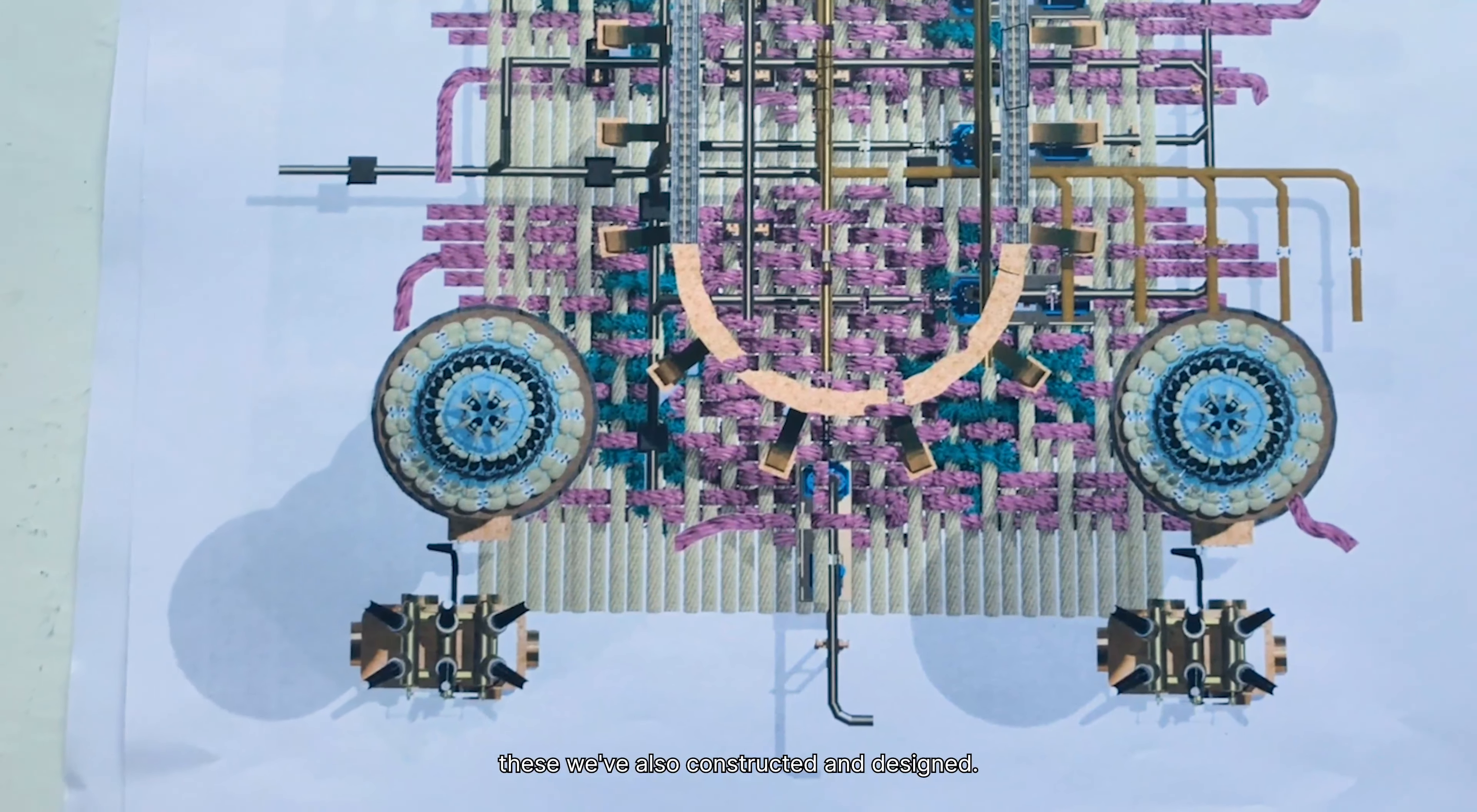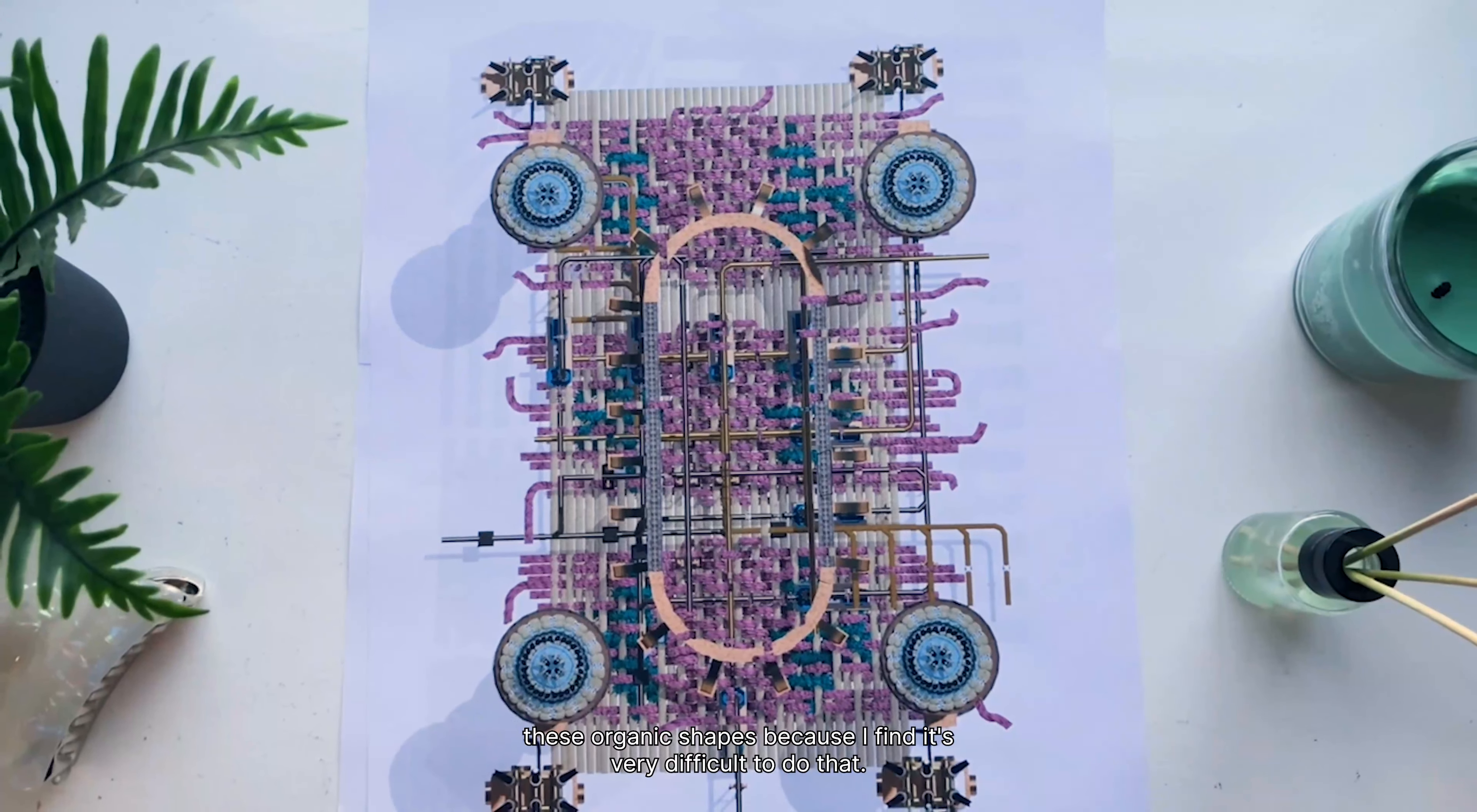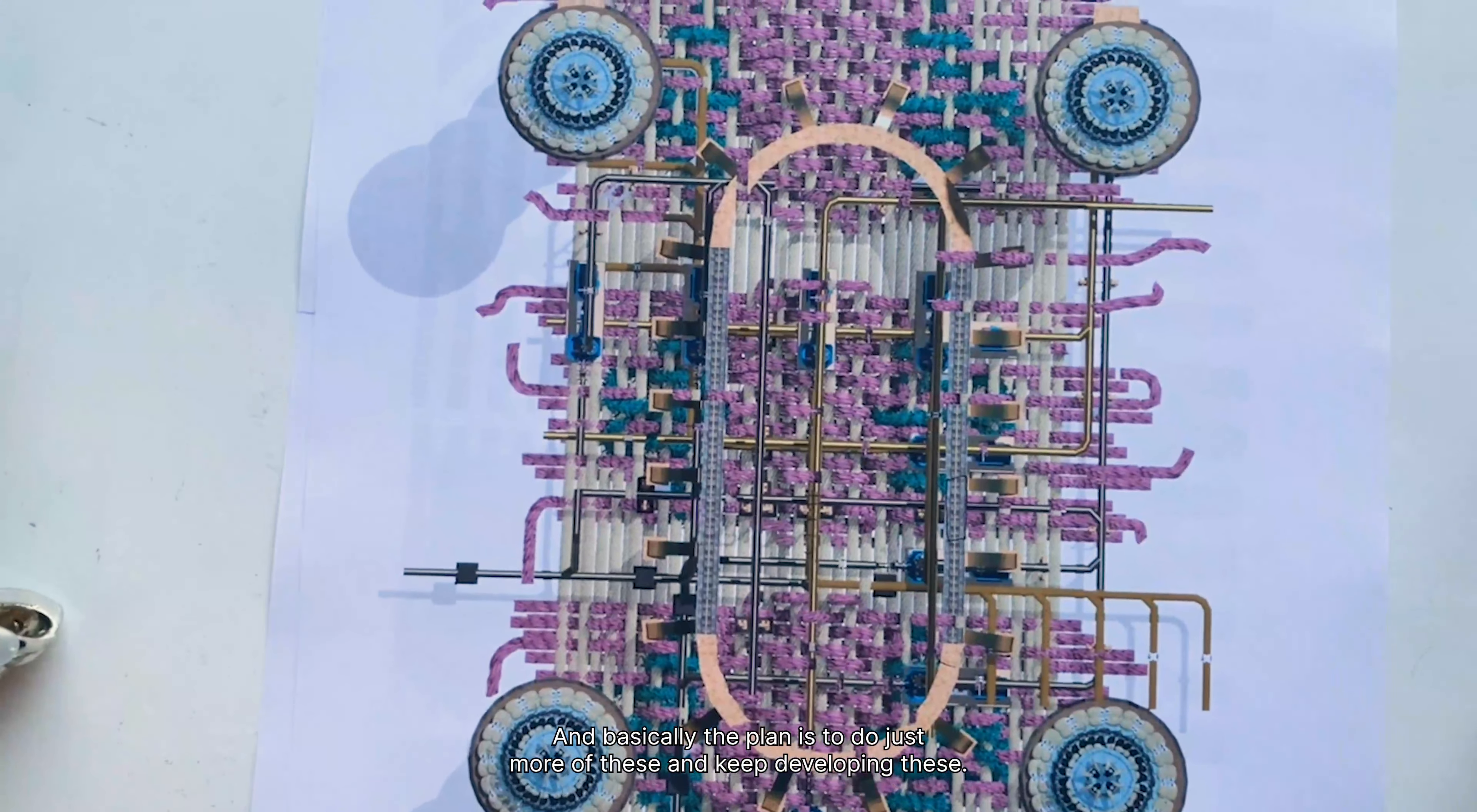So these are done in two different software. The first is in SketchUp, my main 3D modeling software, and the second one is in Modo. I've been using Modo to form these organic shapes because I find it's very difficult to do that in SketchUp and Rhino. Modo just gives you a lot more flexibility but it does have quite a learning curve, which I've noticed. But I think it's given me a really successful outcome.